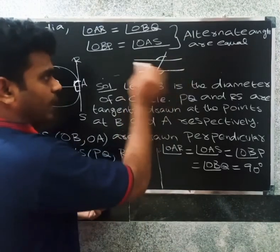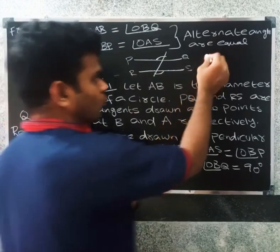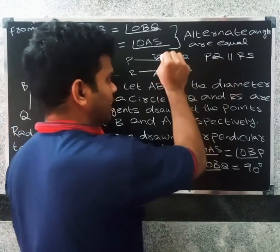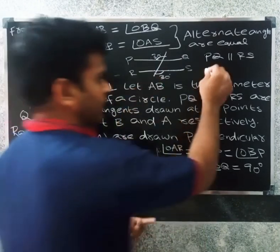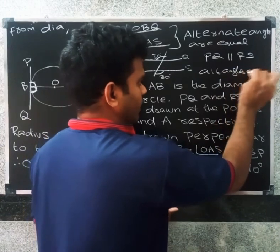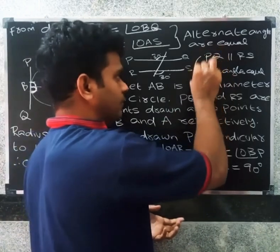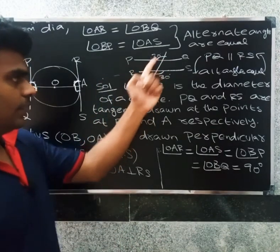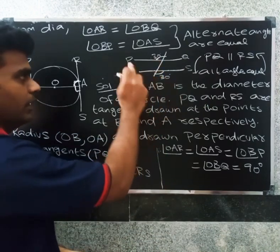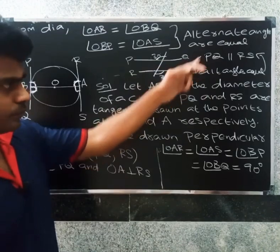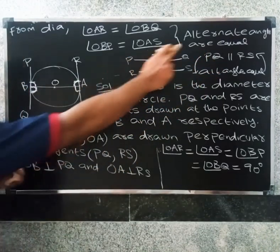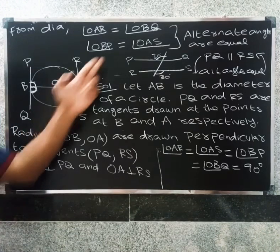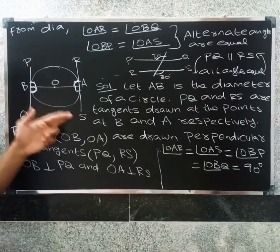If two lines are parallel, for example PQ and RS, then alternate angles are equal. Conversely, if alternate angles are equal, then the two lines are parallel. We can prove PQ is parallel to RS by proving the alternate angles are equal.